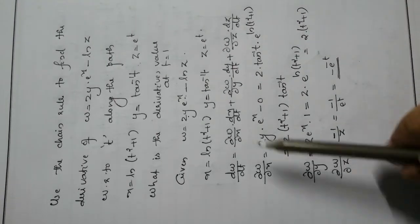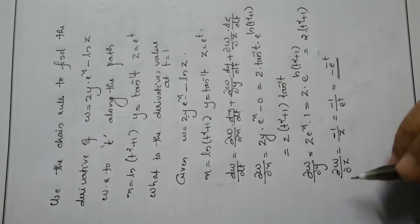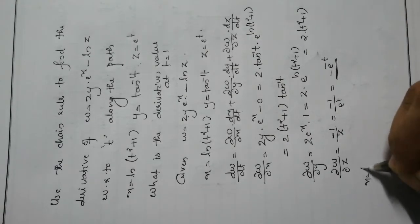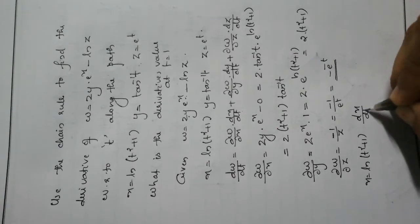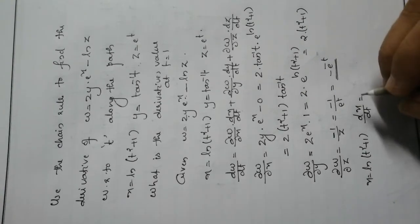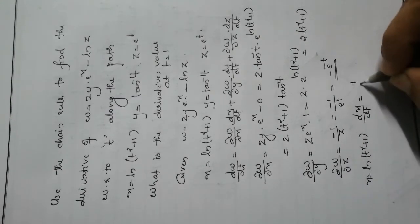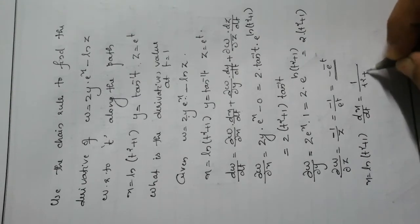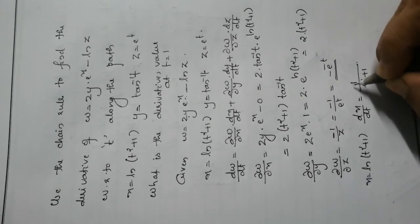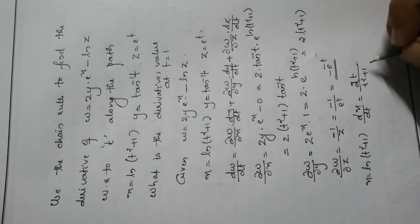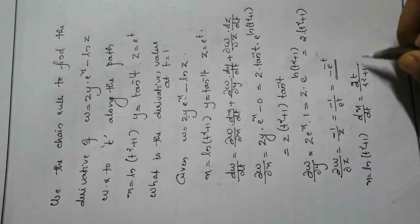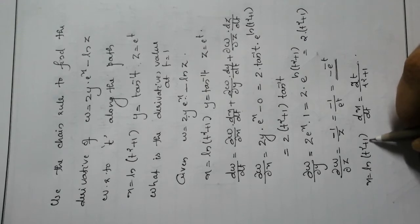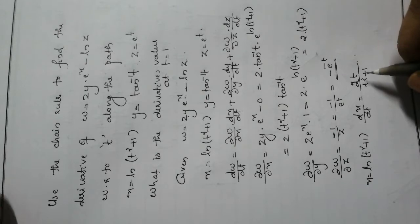Now we calculate dx/dt, dy/dt, dz/dt. For x = ln(t² + 1): dx/dt = (1/(t² + 1))·2t = 2t/(t² + 1). For y = tan⁻¹(t): dy/dt = 1/(1 + t²). For z = e^t: dz/dt = e^t.